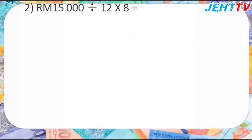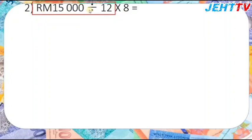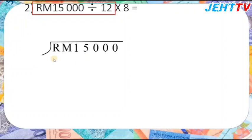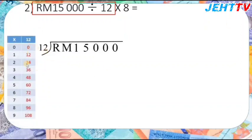Now we try question number 2: RM15,000 divided by 12, multiplied by 8, equals how much? First, we calculate from left to right, so we do the division first: RM15,000 divided by 12. We need to prepare the times table of 12.